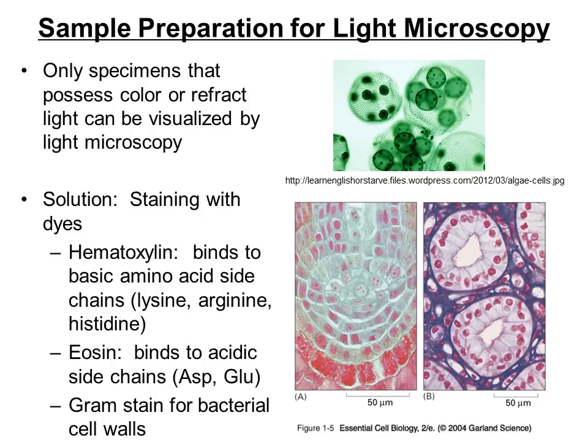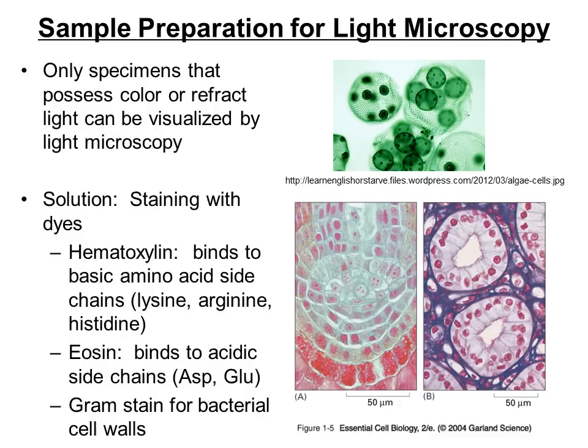Another stain commonly used in biology is the gram stain. The gram stain is able to stain more specifically the bacterial cell wall, helping us distinguish between bacteria that are gram positive versus gram negative. Next slide.